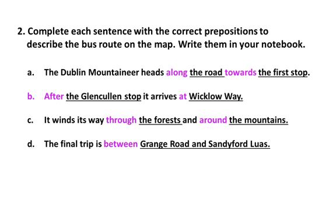Page 124, question number 2: complete each sentence with the correct prepositions to describe the bus route on the map. Write them in your notebook. The colored words are the prepositions and the underlined words are the bus route. A: The Dublin Mountaineer heads along the road towards the first stop — along and towards are the prepositions. B: After the Glen Gulen stop, it arrives at Wicklow Way — after and at are the prepositions. C: It winds its way through the forests and around the mountains — through and around are the prepositions. The final trip is between Grange Road and Sandiford Lewis — between is the preposition used.